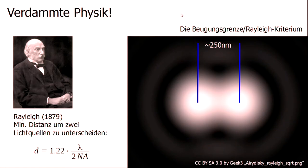Some of you have already heard about the diffraction limit. The most important person here is Rayleigh, who came up with the Rayleigh criterion. This criterion tells you how you can distinguish two point-shaped sources — when can you still resolve them?